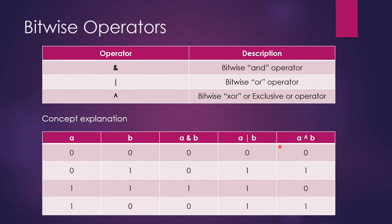Moving on to bitwise operators: AND, OR, and XOR. If A has a value of 0 and B has a value of 0, then for AND both conditions are not fulfilled, so it gives 0. For OR, no condition is getting fulfilled, so 0. For XOR, it will also give us 0. In AND, both conditions must be fulfilled; in OR, one condition must be fulfilled — 0 is false, 1 is true.